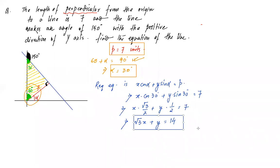The question gave the perpendicular distance from the origin, confirming we use format six. Since we needed p and alpha, and only p was directly given, we used geometry to find alpha = 30°. This is how questions will be twisted — 150° was not alpha; it was the angle of the line with the y-axis. Now we move to a very important topic: conversion of general form to various forms.